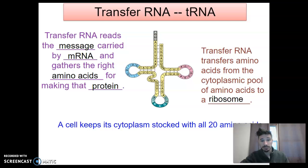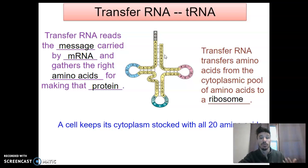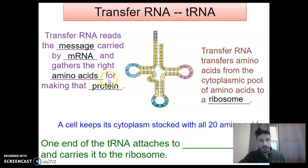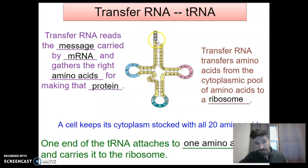A cell keeps its cytoplasm stocked with all 20 amino acids, so the tRNA always has the full pool of amino acids to pull from. One end of the tRNA attaches to one amino acid and carries it to the ribosome — it's this exposed, uneven end that attaches to the amino acid, and as the structure travels to the ribosome, the amino acid trails behind it.